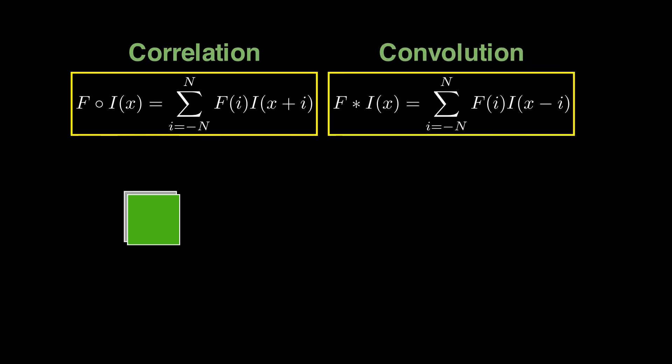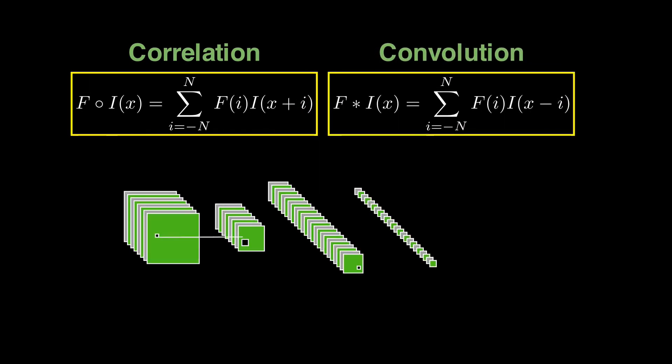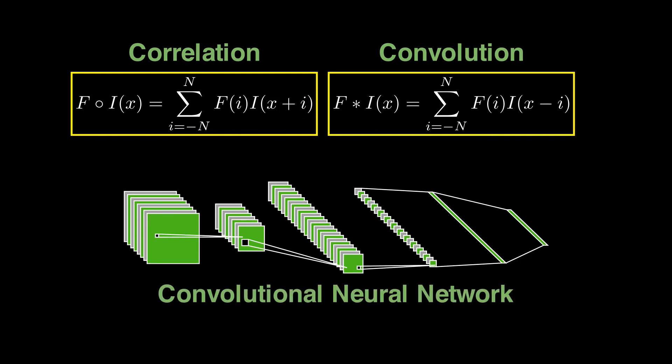Now, in modern machine learning, especially in deep learning, they call the neural network that work on images or for that matter on time series, convolutional neural networks, even though the underlying operation is cross-correlation. So the term convolutional neural network is a misnomer. The operation they are performing is really correlation. Hope this makes sense and clears up some confusion.